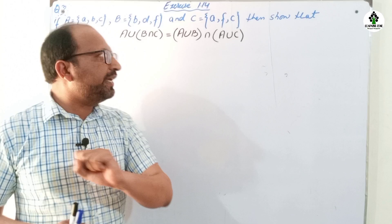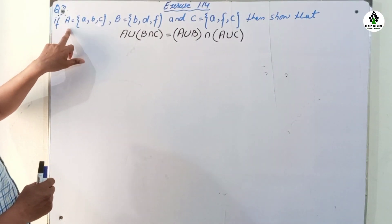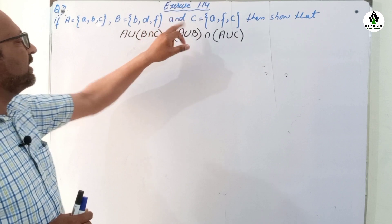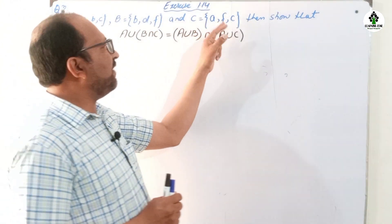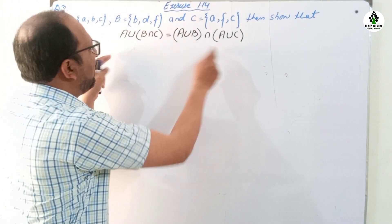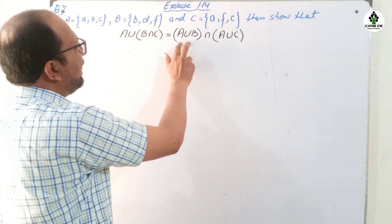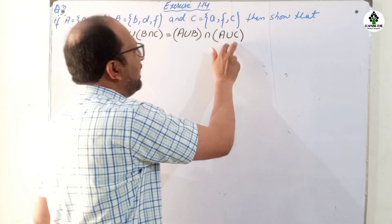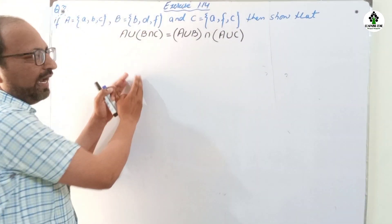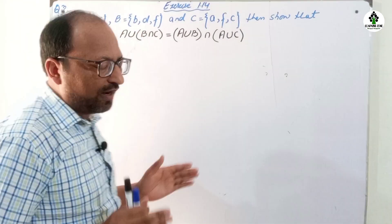Exercise 1.14, question number 3. The question states: if A = {A, B, C}, B = {B, D, F}, and C = {A, F, C}, then verify the following law: A union (B intersection C) = (A union B) intersection (A union C). We have to solve the left-hand side first, then the right-hand side, and both answers should be the same.